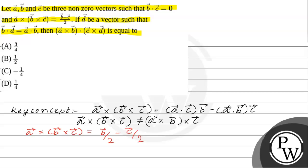Now we will simplify this. So using the formula we will get (a·c)b - (a·b)c = b/2 - c/2.